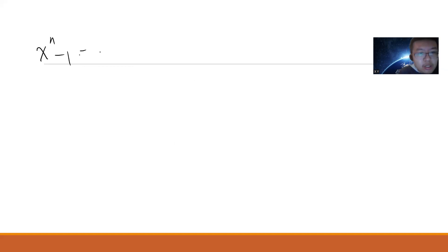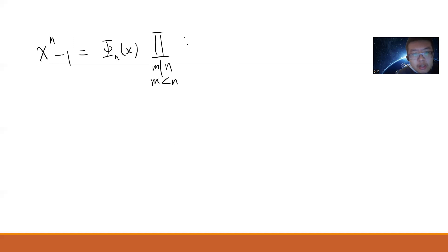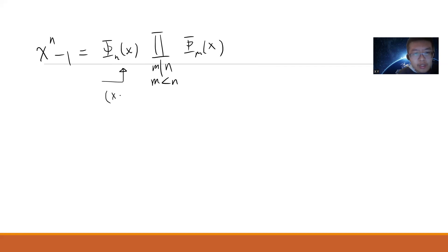The proof idea is very simple. We know that x^n - 1 can be written as φ_n(x) times the product over all proper divisors m of n of φ_m(x). So obviously, if there is a root a of φ_n, then x^n - 1 will contain the factor (x - a), and φ_n(x) will also contain the factor (x - a).